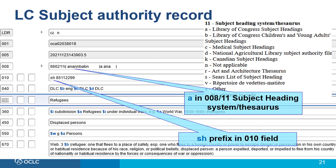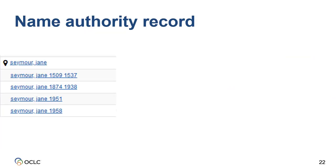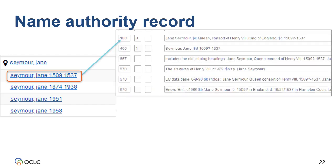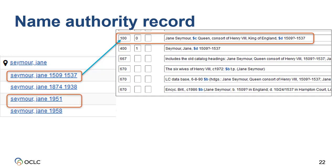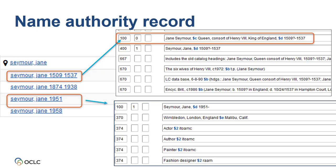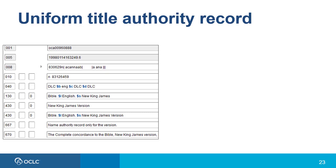Another purpose of authority records is to disambiguate similar names. The valid form of heading for Jane Seymour, the third wife of King Henry VIII, includes subfield C for her title — Queen Consort of Henry VIII, King of England — and the dates 1509–1537 in subfield D. While the authority record for Jane Seymour the English actress includes her birth date 1951 in subfield D of the authority record.